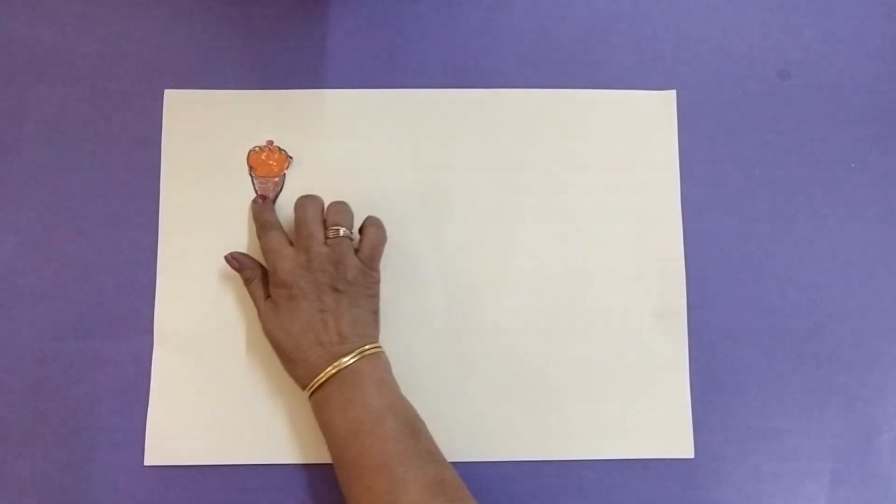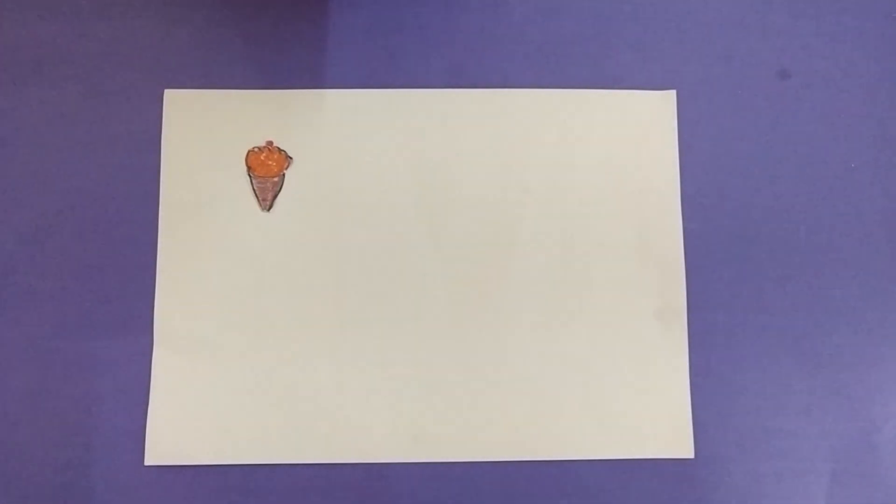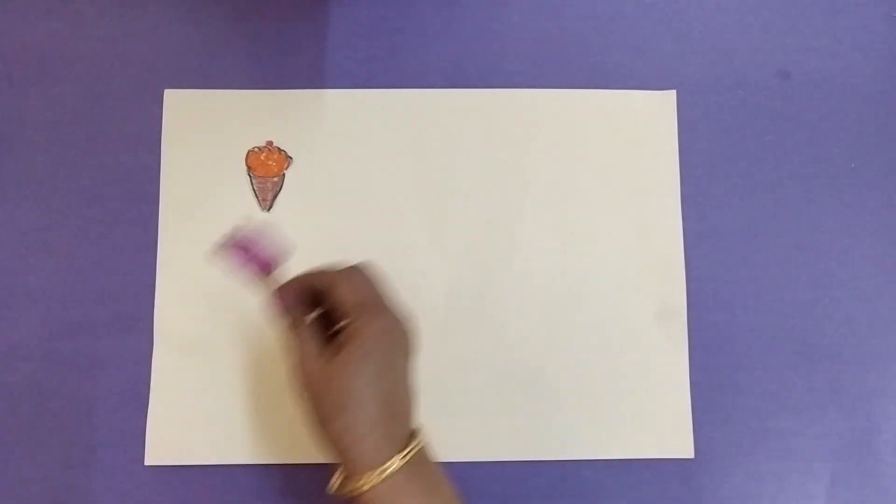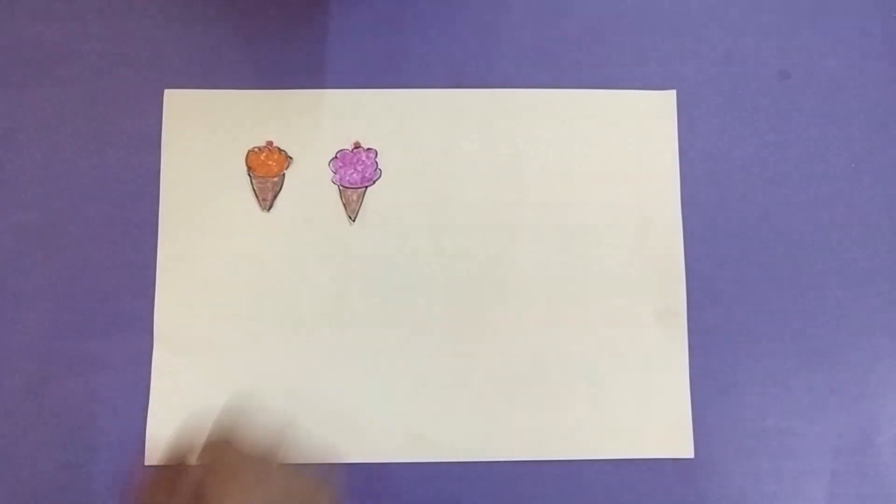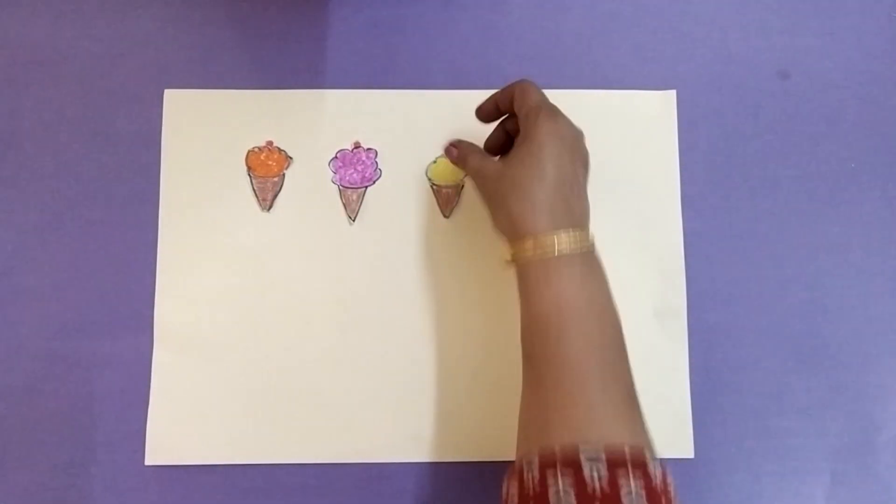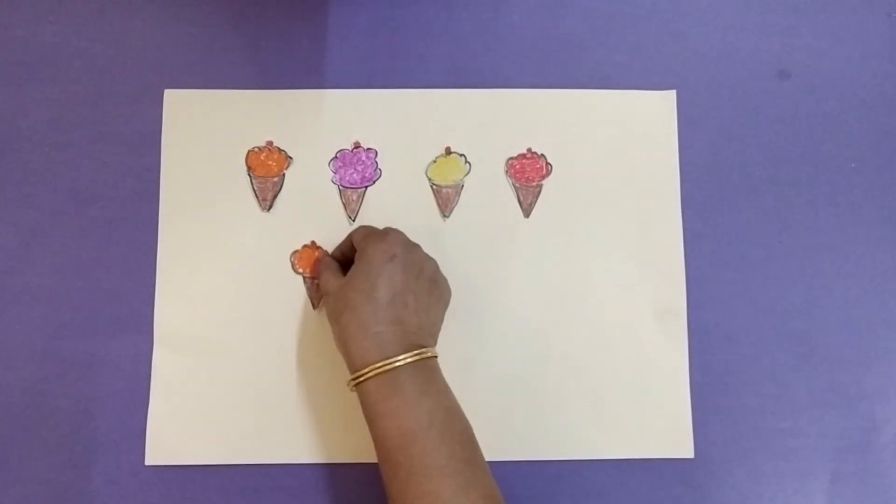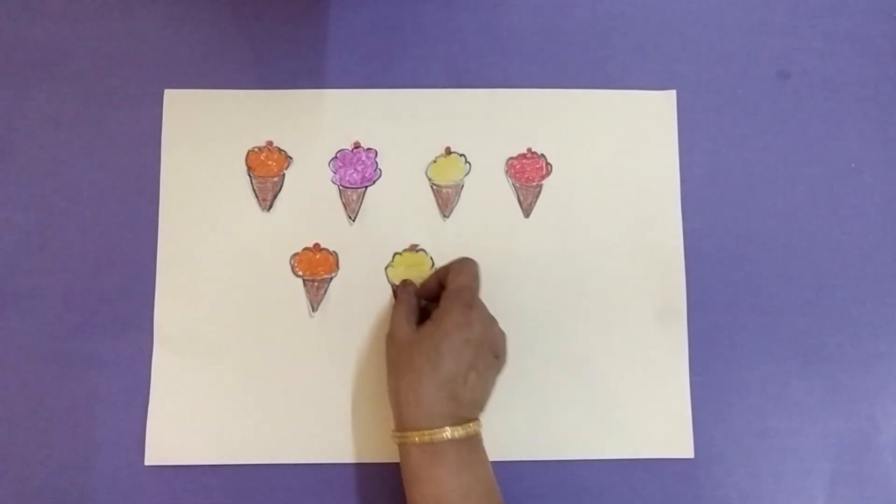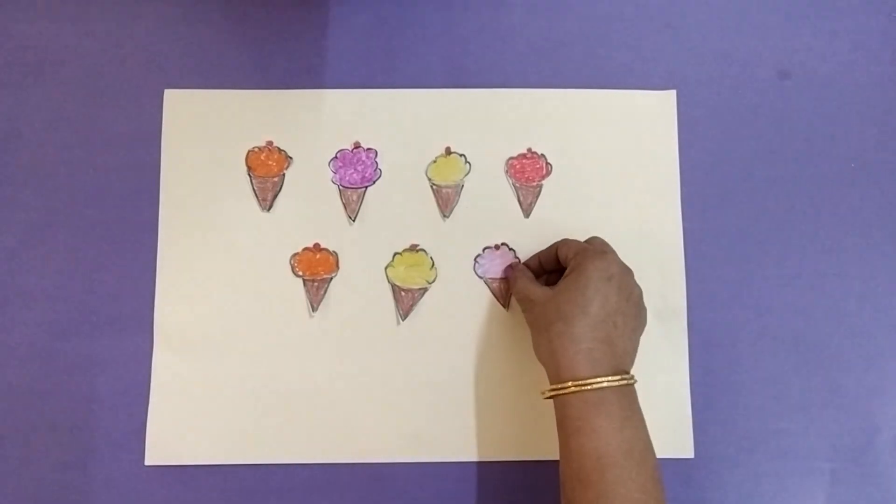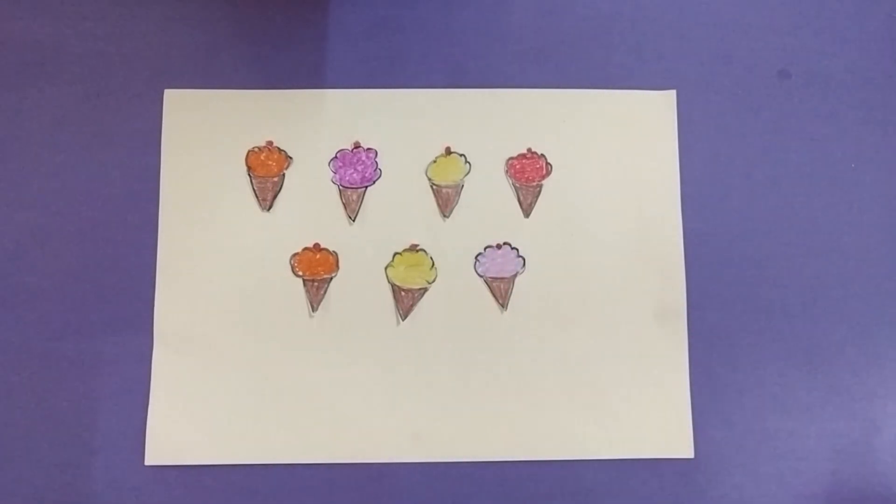बच्चों, ये क्या है? देखिए. Ice cream. Softie. Let's count. One, two, three, four, five, six, seven. कितनी softies हैं? कितनी ice creams हैं? Seven. Seven ice creams.